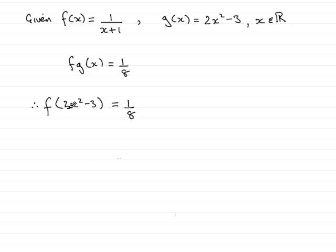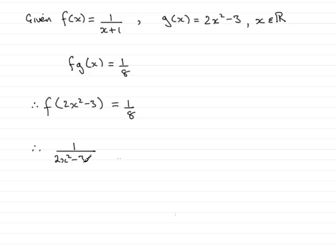f of 2x squared minus 3 means that we need to replace any x in f of x with 2x squared minus 3. There's only the one x in this particular example. So what we have is 1 over x, which is now replaced with 2x squared minus 3. So 2x squared minus 3, and then we need to add that 1 on the end. And this equals 1 eighth.